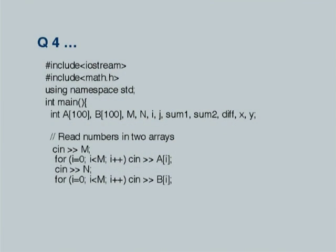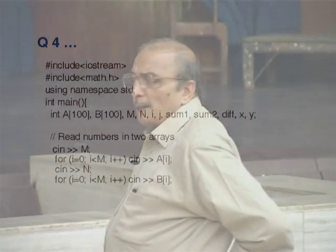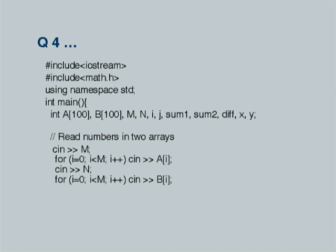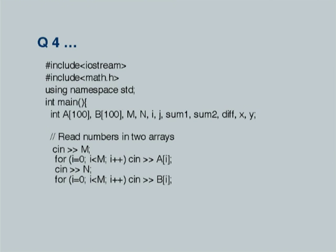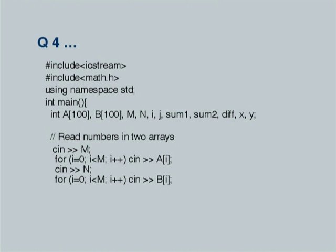Here is the sample answer to that question. I start with declaring two arrays A and B. I have a host of variables: M and N are the actual sizes of the two arrays. I and J are traditional indices — I will be used as an index of the first array, J as an index of the second array. That is just a convention. Similarly, if you have a two-dimensional array, I represents rows and J represents column index. Sum1 and sum2 are the two sums I will calculate. Dif is the difference between these sums. We shall see why that difference is relevant. X and Y are any two elements I am looking at.